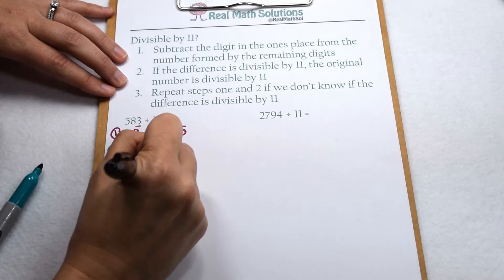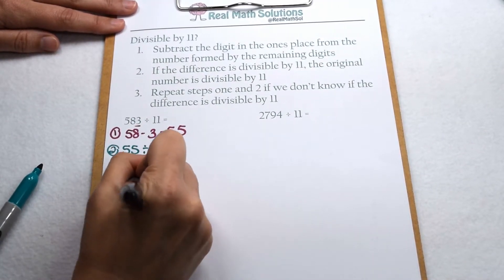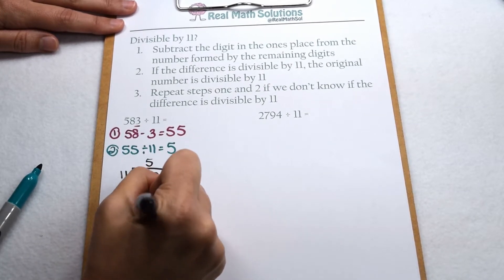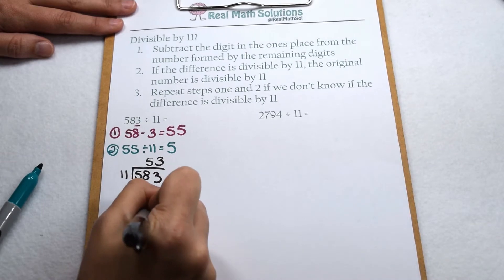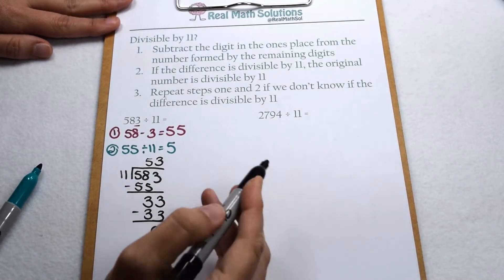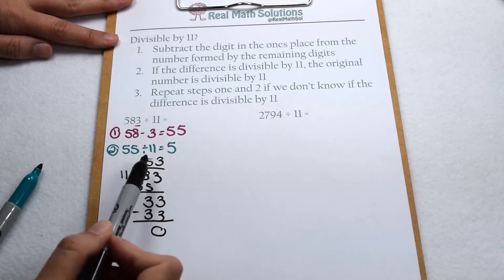If we want to test to make sure we're right, we can do 583 divided by 11. 11 goes into 58 five times, subtract out the 55 that leaves me with 3, bring down my 3. 11 goes into 33 three times with none left over. So as we predicted, 583 is divisible by 11 with no remainders.